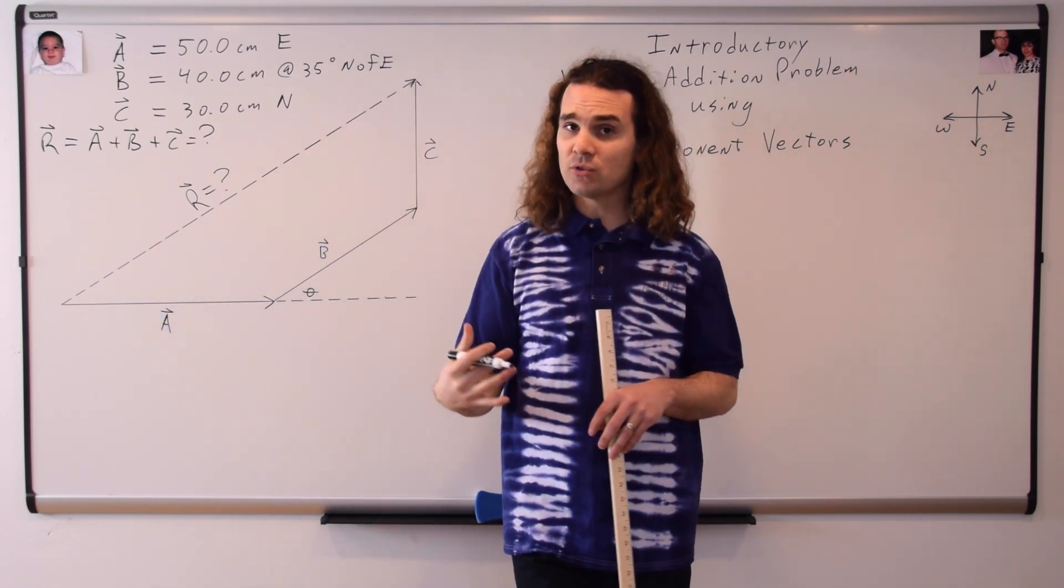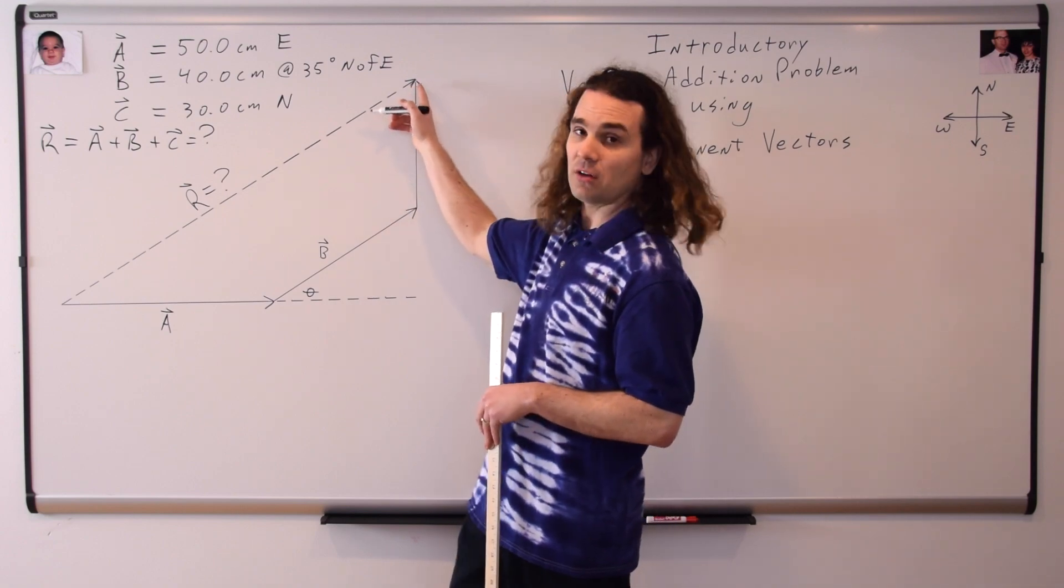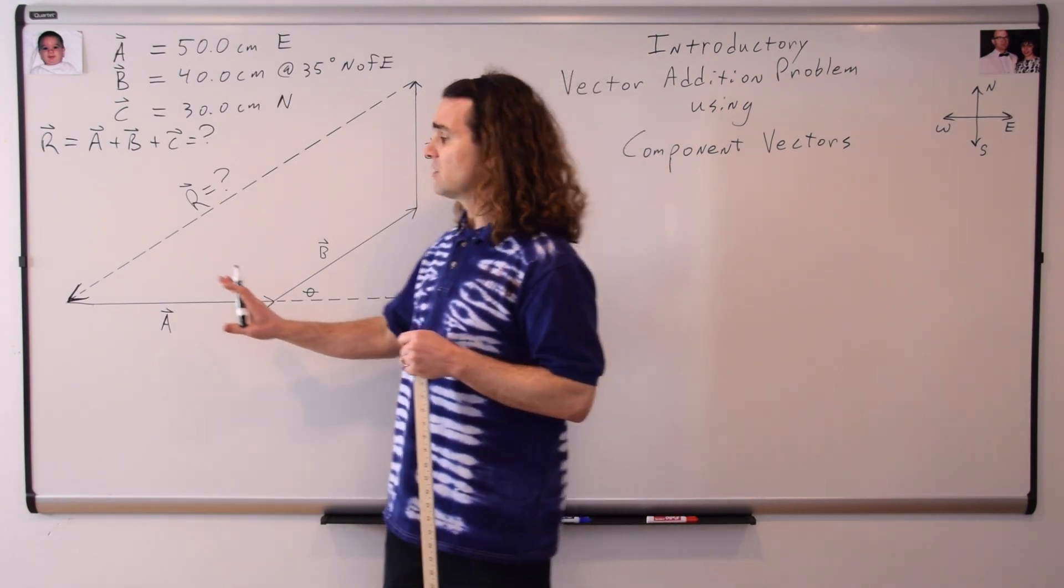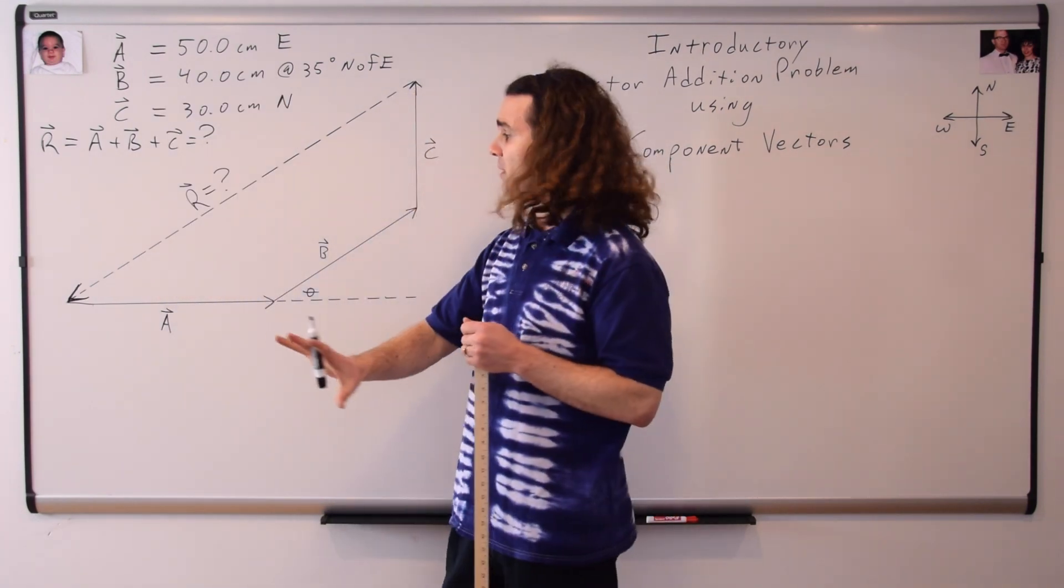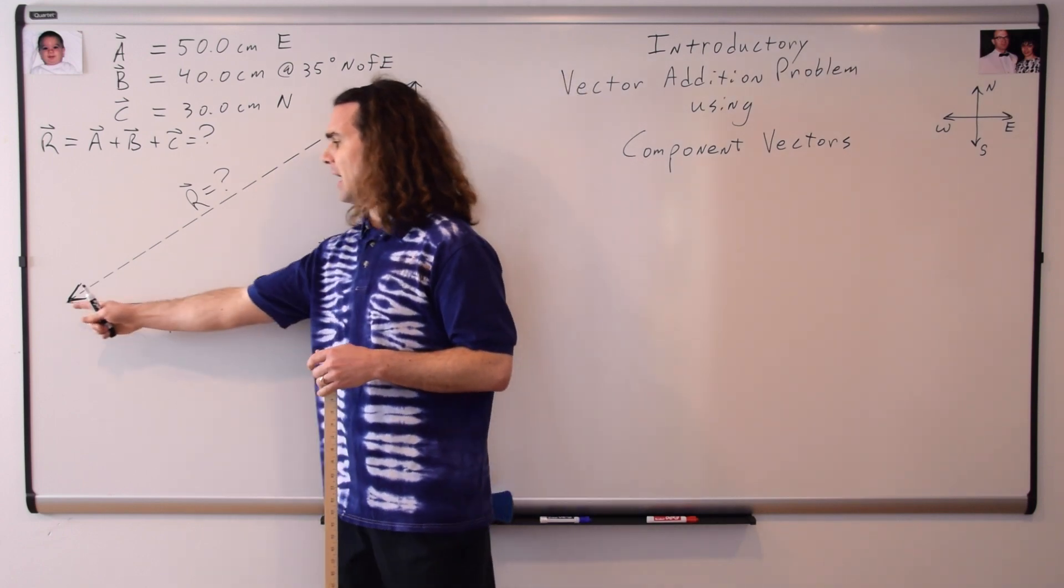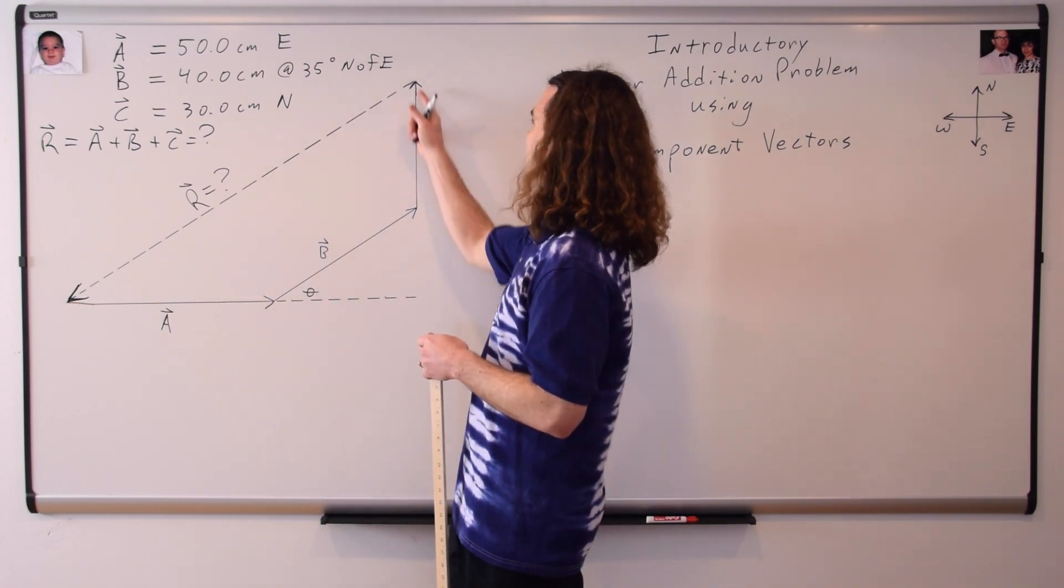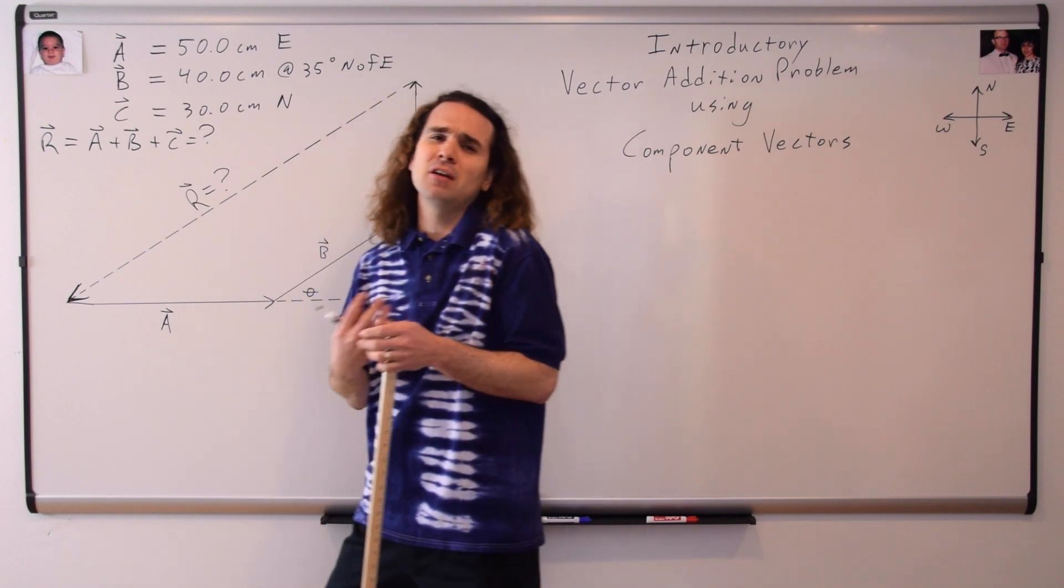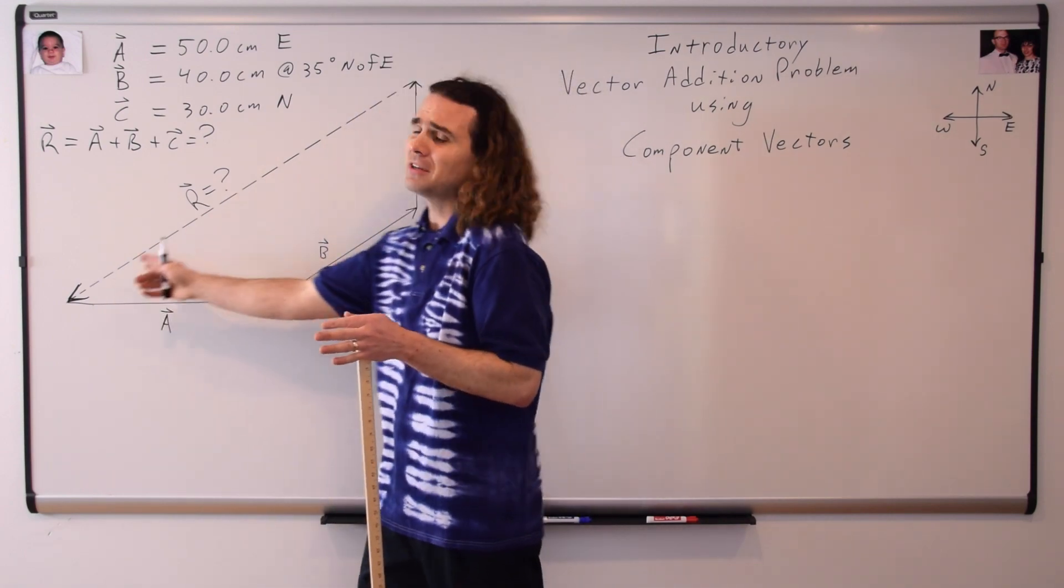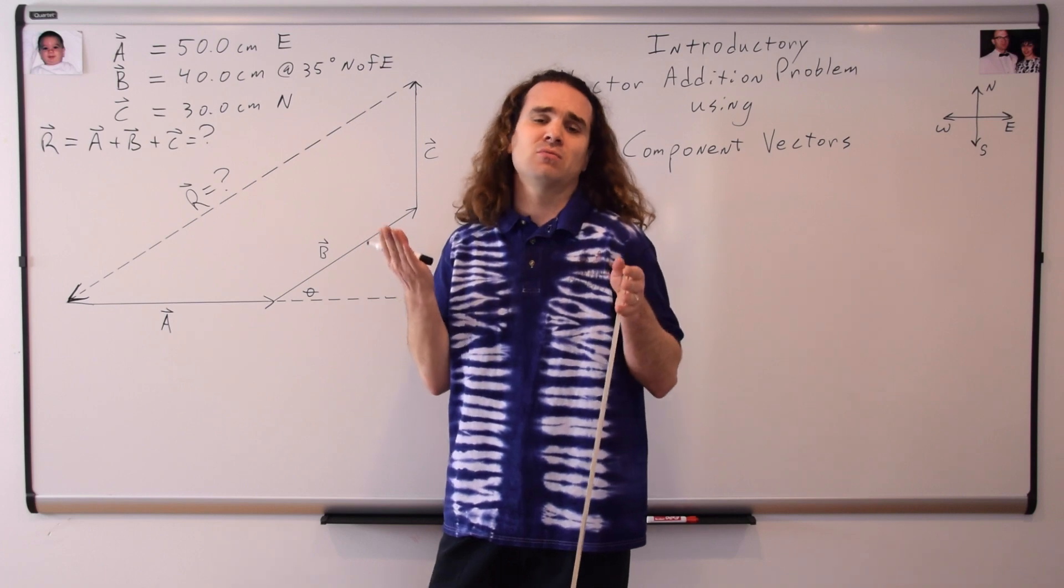Now, some students want to put this arrowhead on the resultant vector down here instead. Now, I've drawn it this way, which is wrong, please make sure you realize that, because a lot of students want to draw it this way. And I think it's because vector A goes this way, B this way, C this way, and you want to go back to the beginning. It makes you feel all warm and fuzzy inside, because then you have this loop, and you can just keep going around in the loop, but that's wrong.